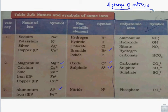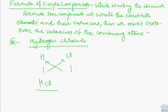Now from this, how we write the chemical formula? While writing the chemical formula for the compound, we write the constituent's elements and their valencies, and after that we must cross the valencies of the combining atoms.